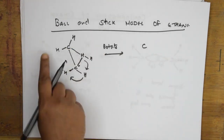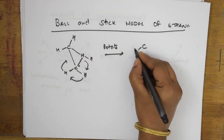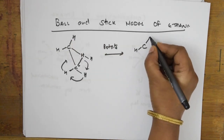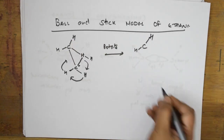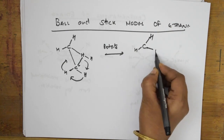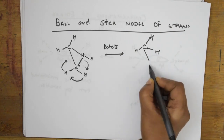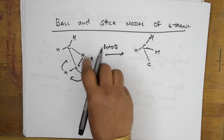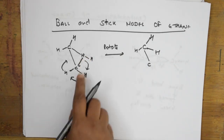The stability order for conformers of butane: fully eclipsed (1) is less stable than partially eclipsed (3), which is approximately equal in stability to partially eclipsed (5), which is less stable than gauche (2 and 6), which are approximately equal to each other, and all are less stable than anti-staggered (4). Staggered is equally spaced; fully eclipsed has maximum torsional strain and is least stable.